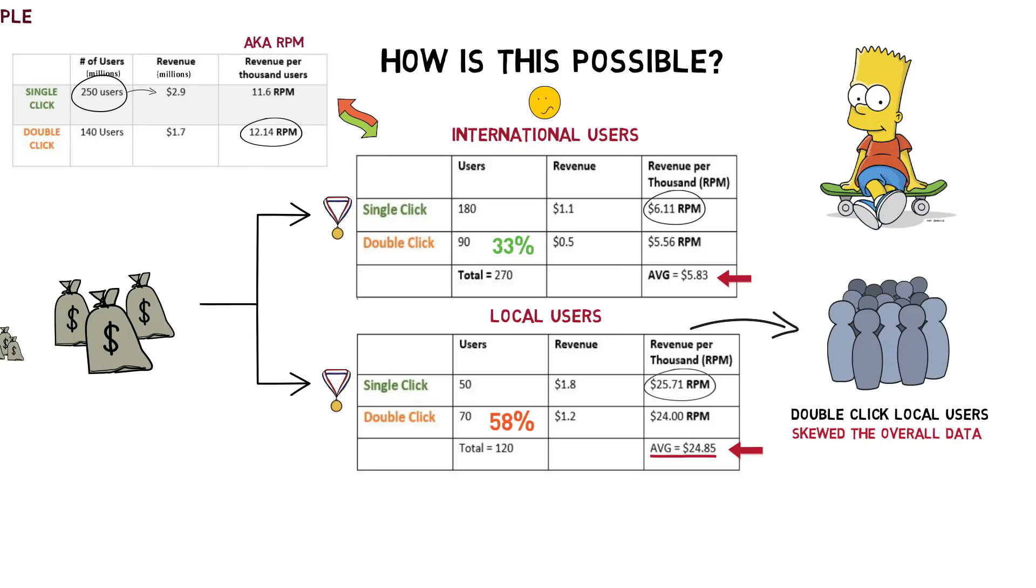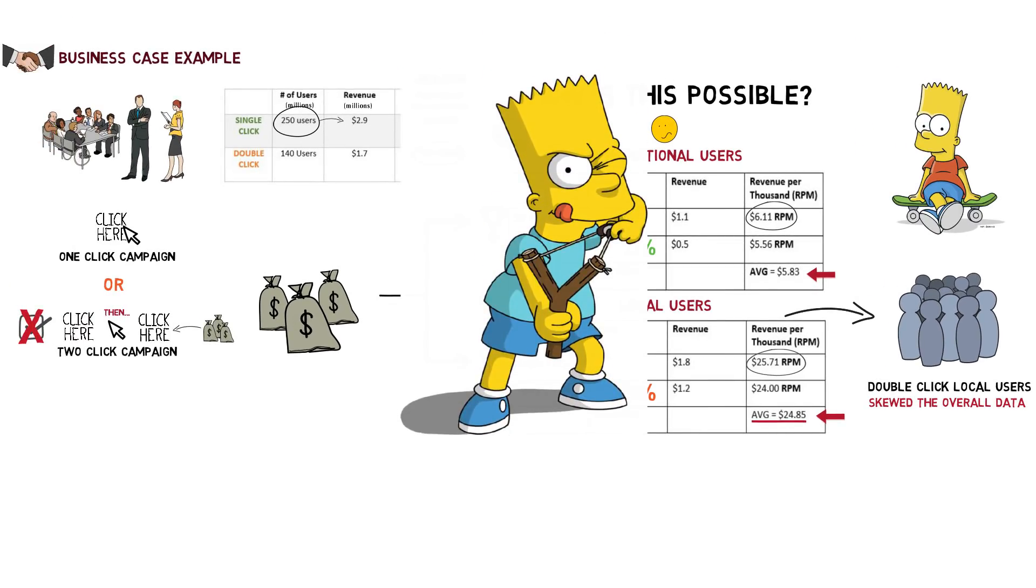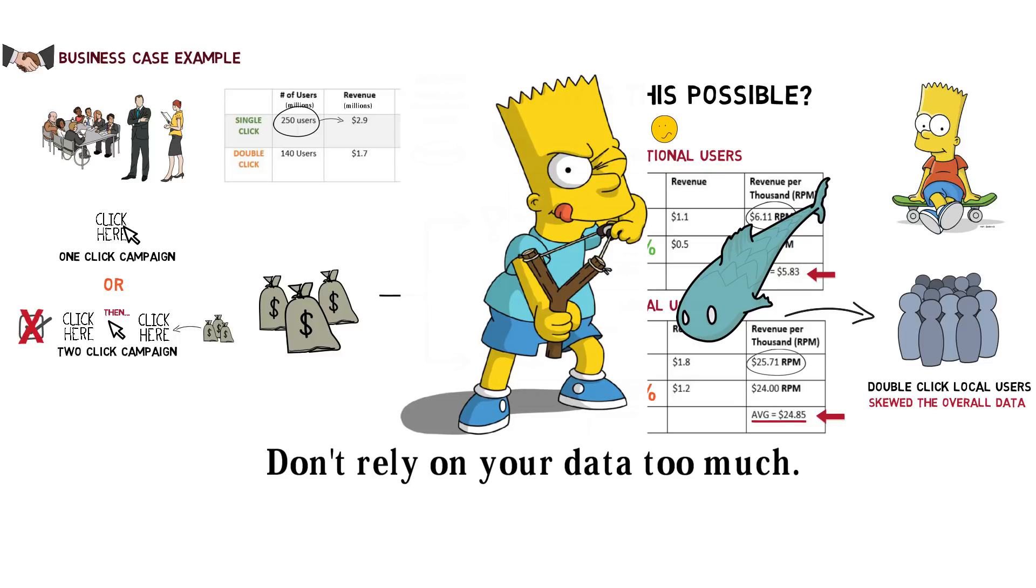Simpson's Paradox can be tricky. The key is to look out for any hidden variables that may be influencing your data. The lesson here is: don't rely on your data too much. If something smells fishy, look into it. Do not trust your data blindly.